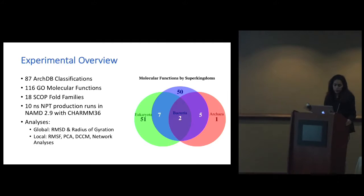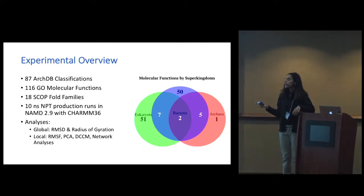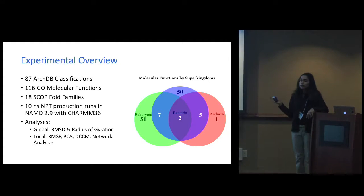The analysis we performed: at the global level, RMSD and radius of gyration. At the local level, we looked at individual loops, their RMSF, PCA, dynamic cross-correlation matrices, and then network analysis based on the networks on these DCCMs.